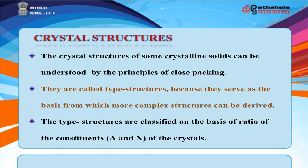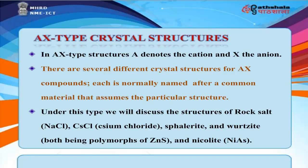The crystal structures of some crystalline solids can be understood by the principles of close packing. They are called type structures because they serve as the basis from which more complex structures can be derived. Type structures are classified on the basis of the ratio of the constituents A and X of the crystals. In AX-type structures, A denotes the cation and X the anion. Several different crystal structures exist for AX compounds, each normally named after a common material, including rock salt NaCl, caesium chloride CsCl, sphalerite and wurtzite (both polymorphs of zinc sulfide), and nicolite NiAs.